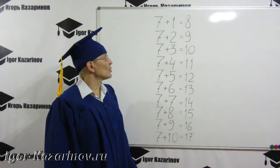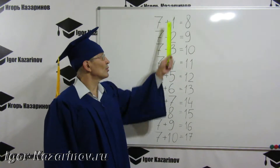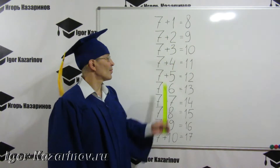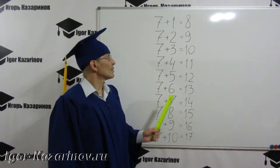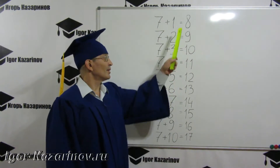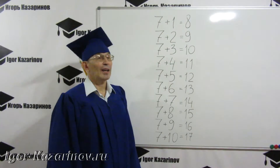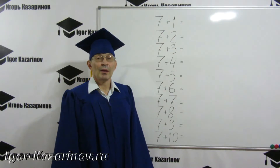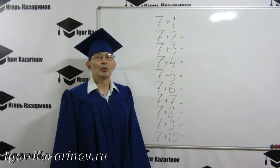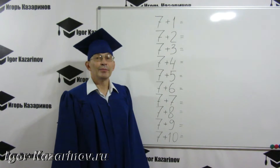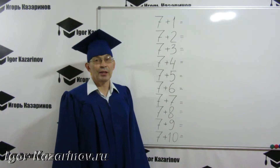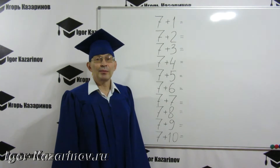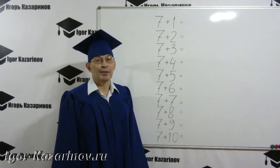So, first of all, you need to learn this whole table in a row. Drill it. Repeat. I will remove the answers. Now, I will show you some line and you need to answer instantly. I will give the correct answer in a second.